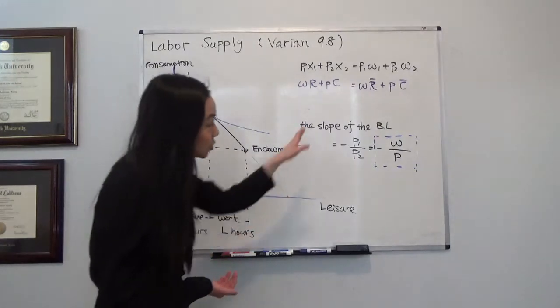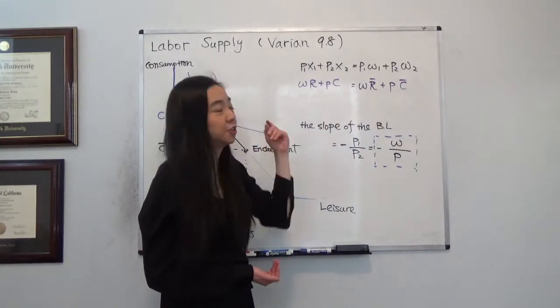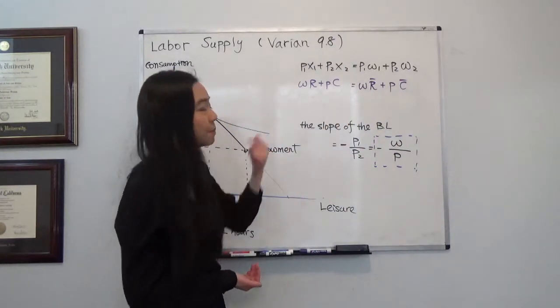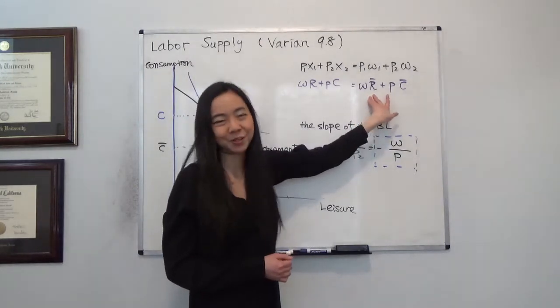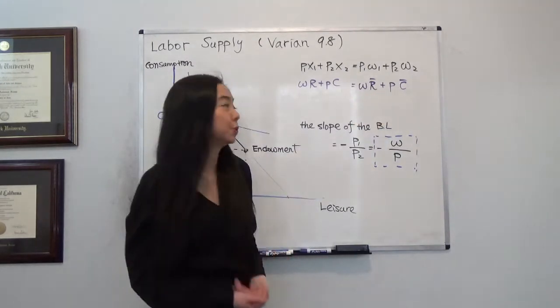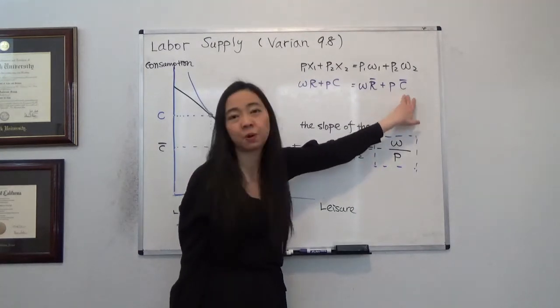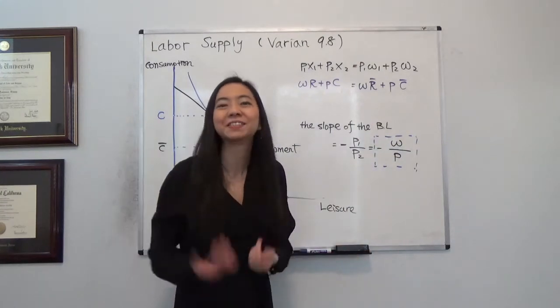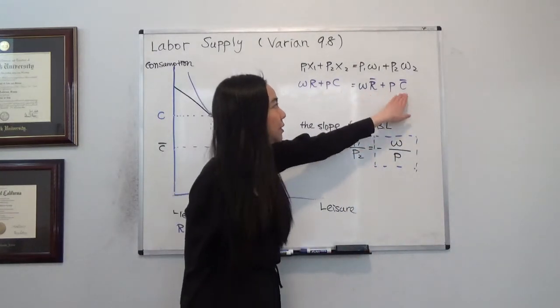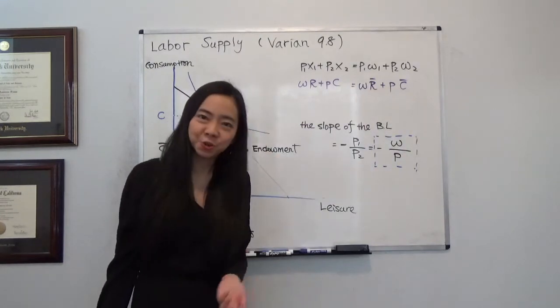Now the initial endowment, we are given r̄ hours and we can choose to either enjoy the leisure or spend the time on work. So that's the initial endowment, r̄ hours. And we're also endowed with c̄ units of consumption, where p times c̄ is equal to m, that's the non-work income my parents gave me. So that's the initial endowment, r̄ and c̄.